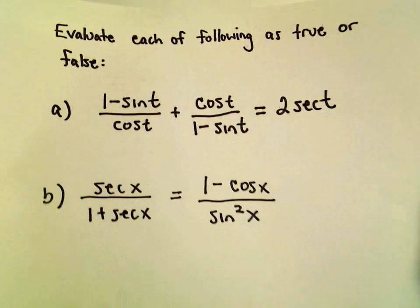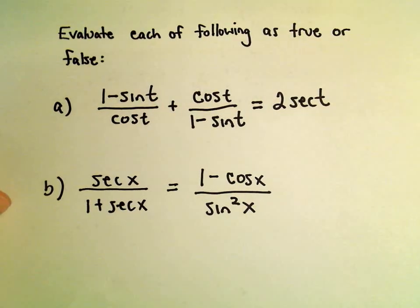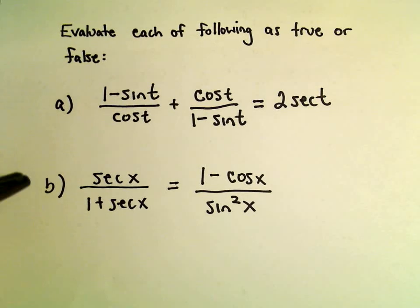In this video I want to look at proving some identities. Suppose we have these couple of identities and we'll try to figure out if they're true or false. Let's look at part A first.